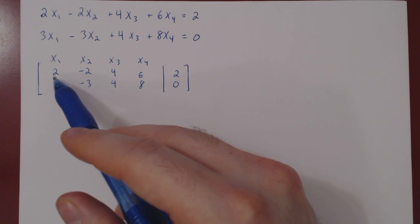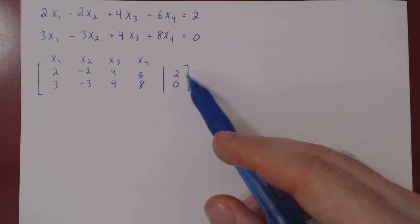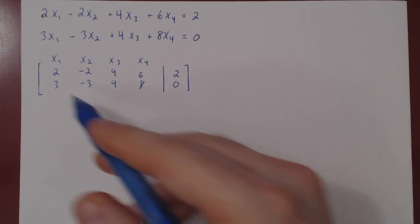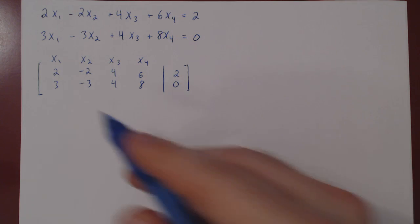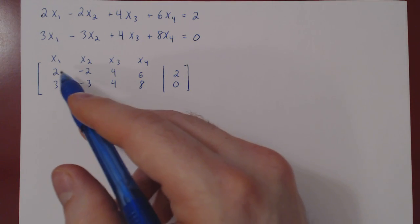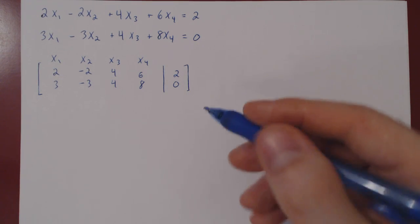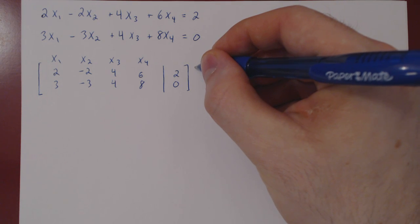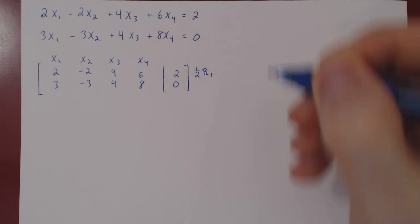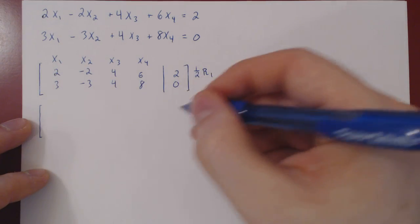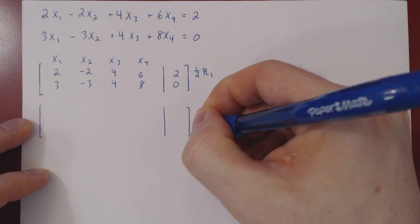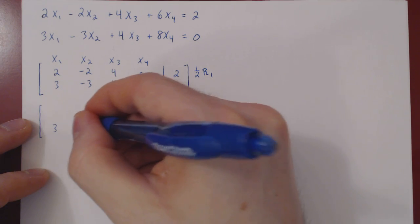But, if you notice also, every coefficient in the first row is divisible by 2. So here we can multiply row 1 by 1 half, get our first leading one that way, because this will not introduce any fraction. So we'll go ahead with this. We'll do 1 half of row 1. We can recopy row 2, as we're not changing it.